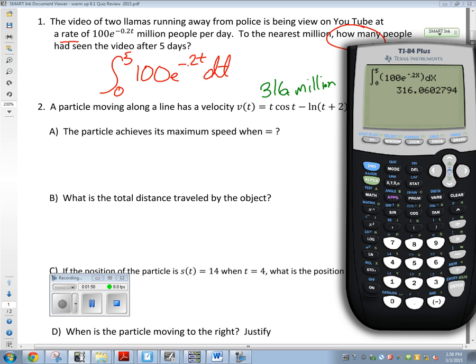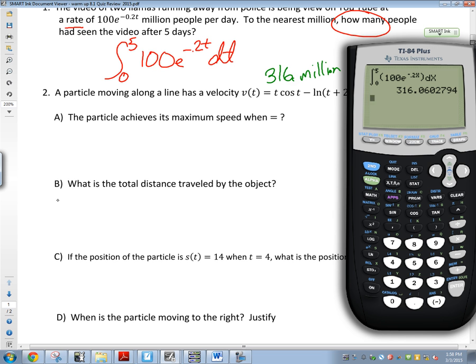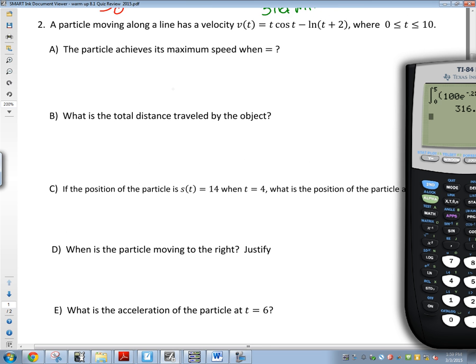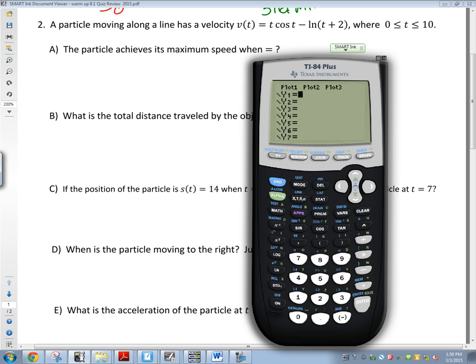Number two is like a five or six part question, but they're all fairly similar. Just understand what's going on. It says a particle moves along the line with velocity v(t) = t cos t - ln(t+2) from zero to ten. Anytime they give me an equation, I'm going to try and graph it. So I'm going to type it in, hit graph, and look at my picture.